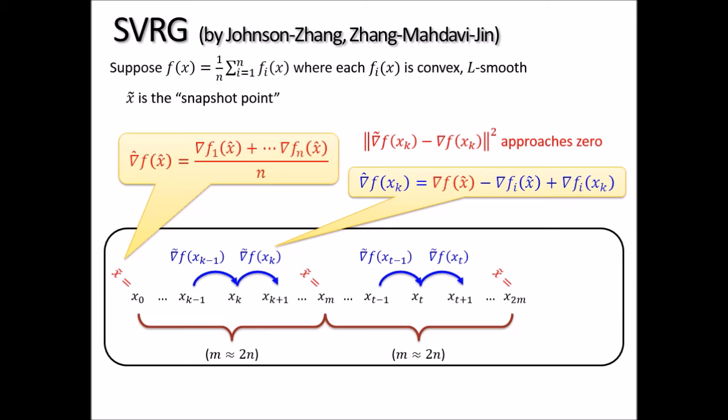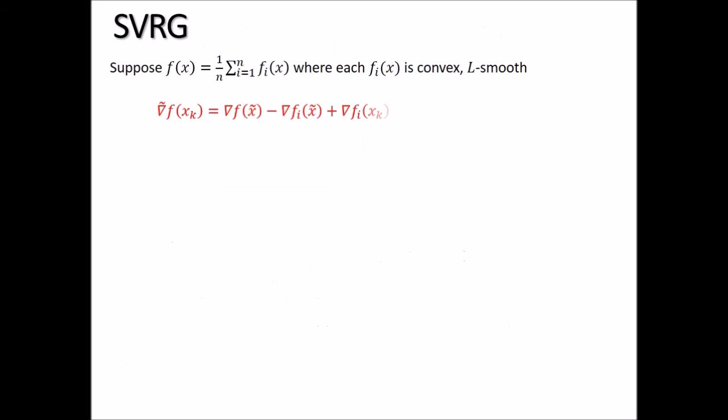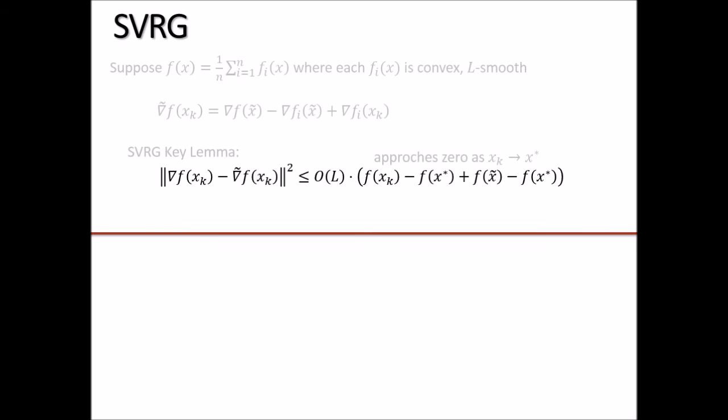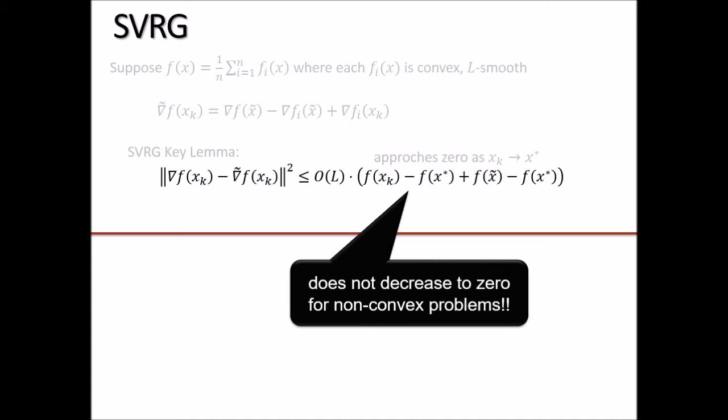In the convex case, the key lemma is that the variance of the gradient estimator is no larger than a quantity involving the distance to the optimizer. As we approach the minimizer, this quantity approaches zero — that is why variance reduction works. In the non-convex world, first, this bound is no longer true. Second, even if it were true, we cannot hope to reach the global minimizer in non-convex optimization, so this quantity does not approach zero. We need a fundamentally different approach.